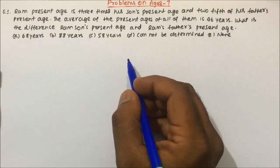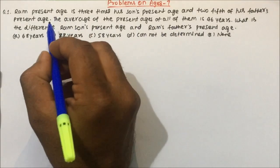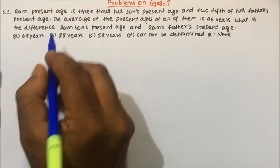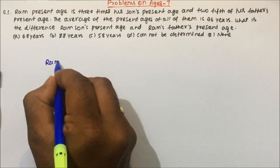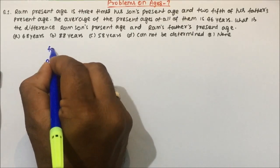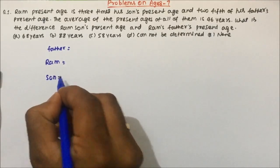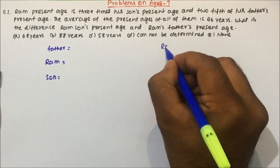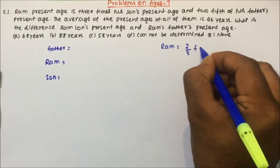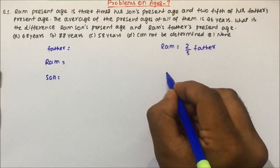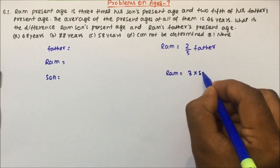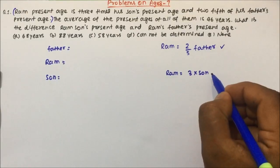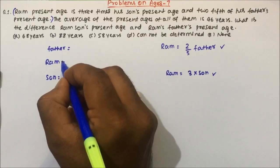Question number 1 is a very important question and this kind of question is nowadays getting asked in exams. Ram's present age is 3 times his son's present age and 2/5 of his father's present age. So see here, 3 persons are there: Ram, Ram's father, and Ram's son. Ram's present age is 2/5 of his father's age and Ram's present age is 3 times his son's present age.